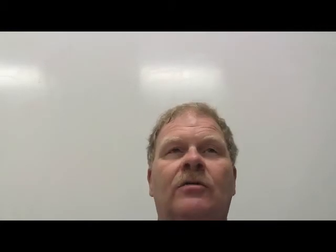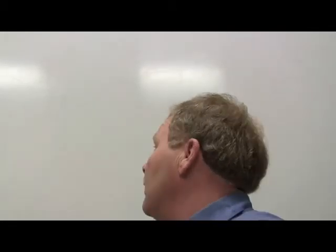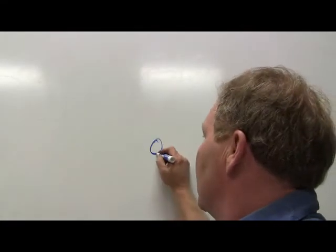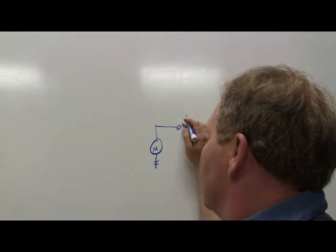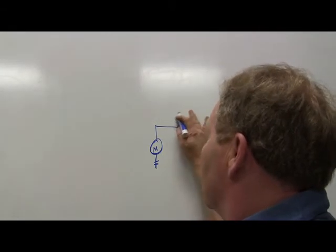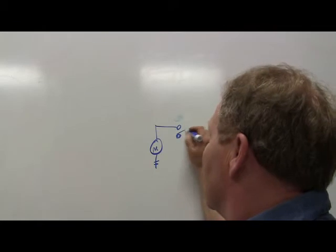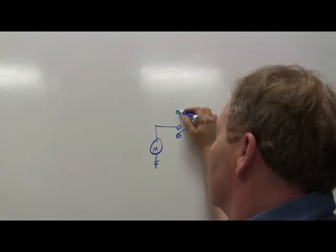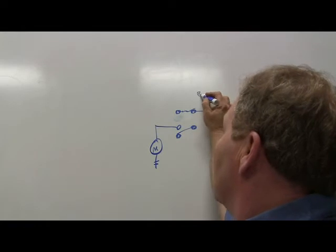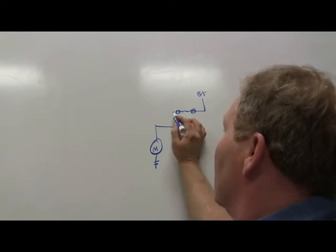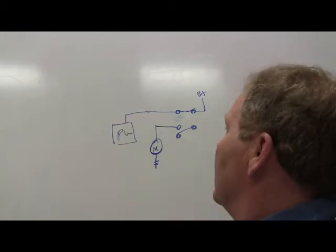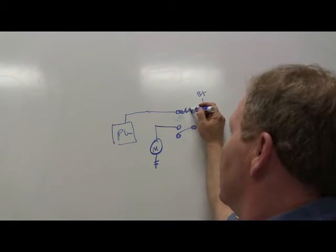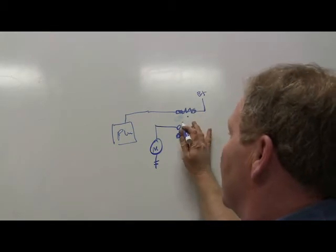Like the fuel pump circuit — you've got a fuel pump motor that's grounded and a relay. B-plus from somewhere feeds one side; the PCM energizes the relay coil from another pin and causes the relay to snap over. The PCM is going to energize that relay and cause this contact to snap over.